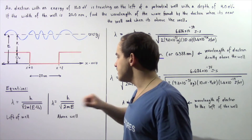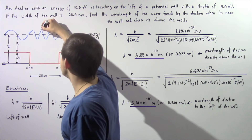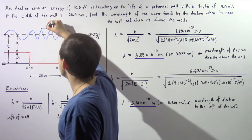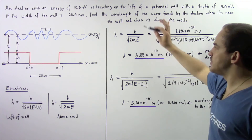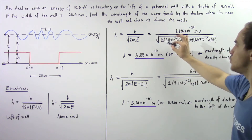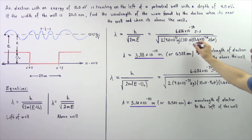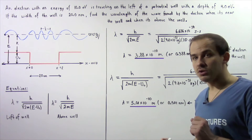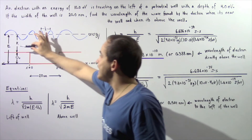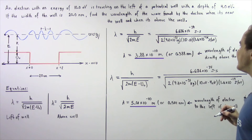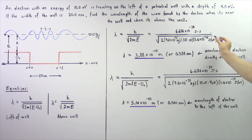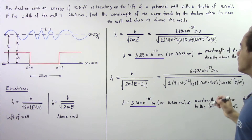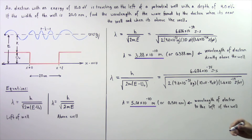We use this equation to calculate the distance between consecutive crests of the wave produced above our potential well. Lambda equals Planck's constant h divided by the square root of 2 multiplied by the mass in kilograms of the electron multiplied by the energy in joules. Since E equals 10 electron volts, we multiply 10 by 1.6 times 10 to the negative 19 joules per electron volt. The electron volt cancels, giving a wavelength of about 3.88 times 10 to the negative 10 meters, or equivalently 0.388 nanometers. This is the wavelength of the electron when directly above the potential well.